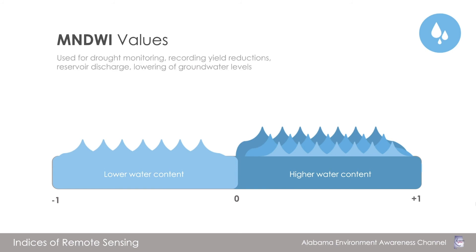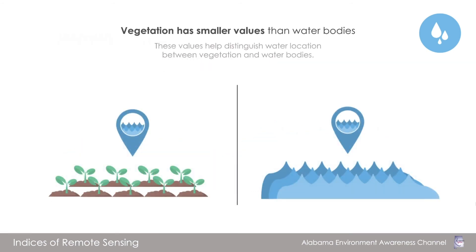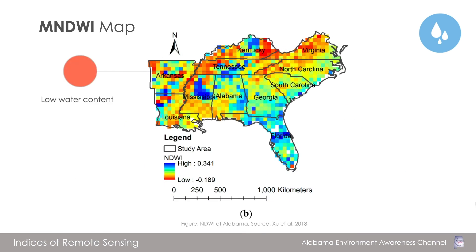Because MNDWI is sensitive to the water content of plants as well as bodies of water, it is often used for drought monitoring, recording yield reductions, reservoir discharge, and the lowering of groundwater levels. MNDWI also diminishes built-up area features that are often correlated with open water in other indices. In MNDWI, values for water bodies are larger, while vegetation has much smaller values, making it easier to distinguish between vegetation and water bodies. Built-up features have positive values between 0 and 0.2.